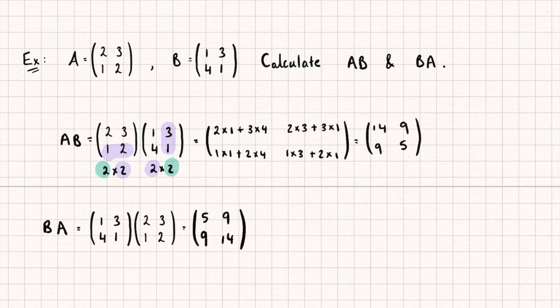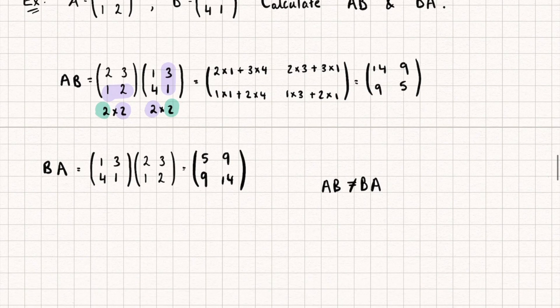You'll notice that the matrix AB is not equal to the matrix BA. This is because matrix multiplication is not always commutative. If it is, then AB equals BA, and that will sometimes happen, but it is not always the case. However, it is associative — meaning if we have three matrices A, B, and C, then (AB)C gives the exact same answer as A(BC).